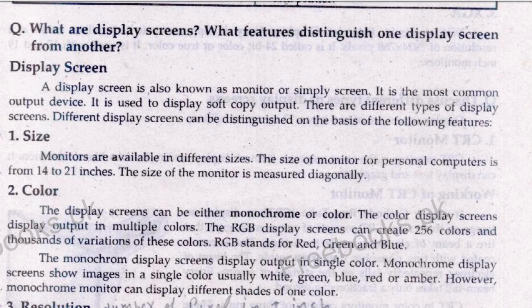Soft copy output means we can see the output but cannot touch it. There are different types of display screens and there are some features that differ between them. The most important feature is size — your monitor or display screen can be of different sizes. The size of a monitor for a personal computer is from 14 to 21 inches. This is an important MCQ point — if someone has a personal computer, the monitor size is 14 to 21 inches.